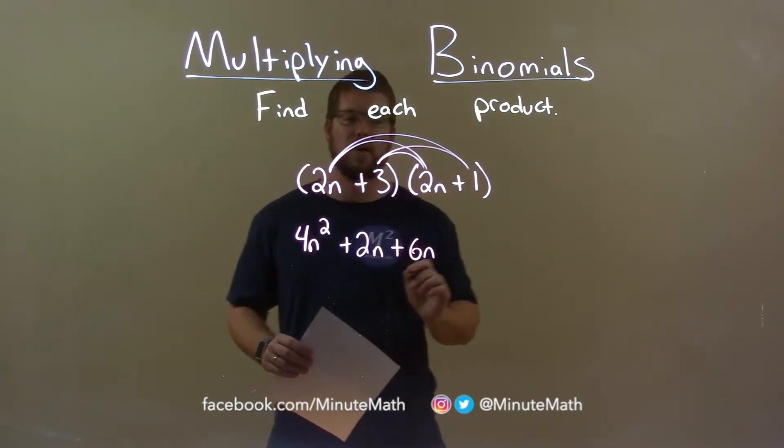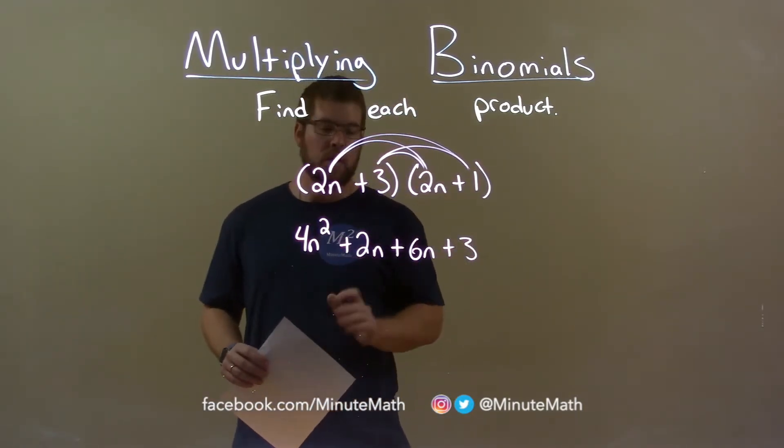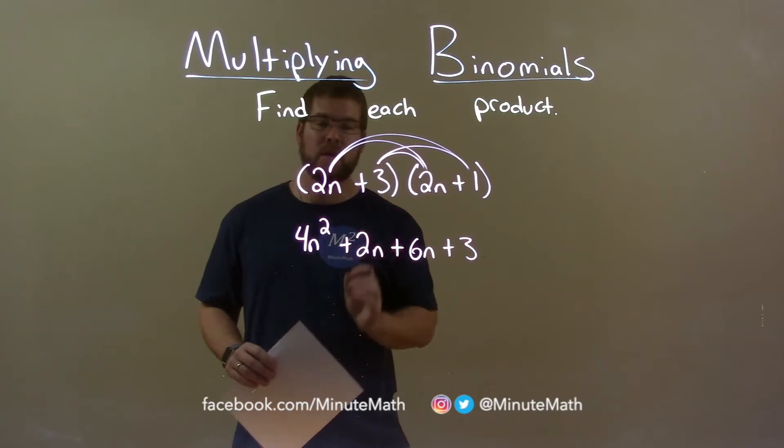And 3 times 1 is 3. We now want to combine our like terms. 2n and 6n are the only like terms here.